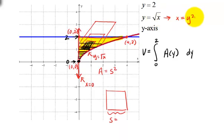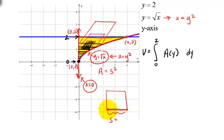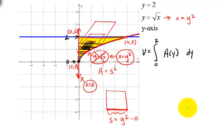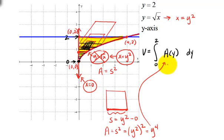An equivalent form of y equals square root of x is x equals y squared. The other curve is x equals 0. So the length of the side of the square is the right-hand curve minus the left-hand curve: y squared minus 0. The area of a square equals S squared, and in our case S equals y squared, so the area equals y to the fourth. This is the expression we're going to integrate — the area of these squares over the interval from 0 to 2 — to get the volume of the solid.